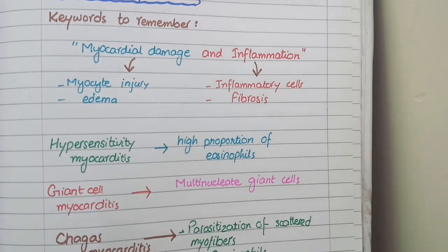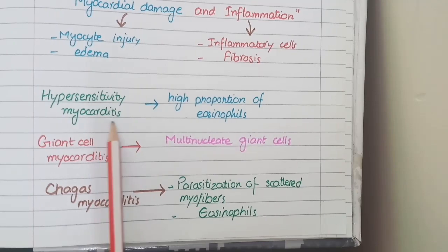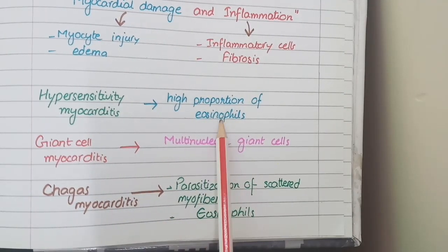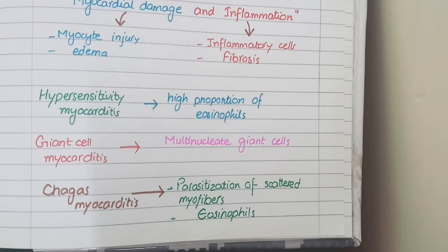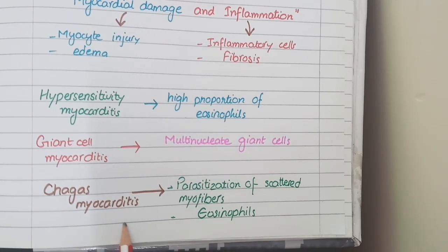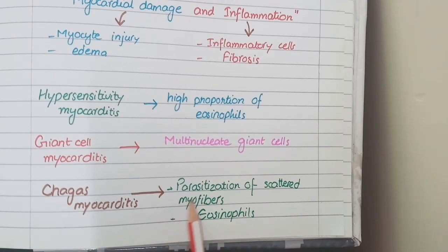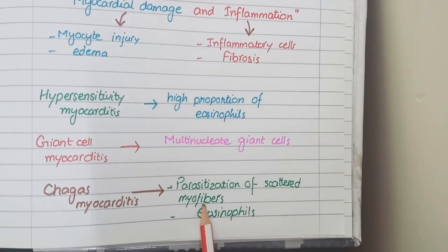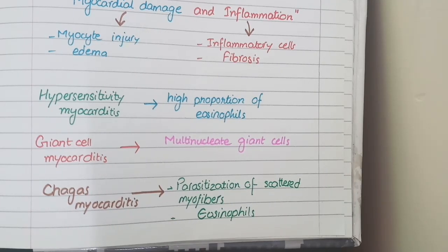There are additional microscopic features depending on the cause. In hypersensitivity myocarditis, you will see a high proportion of eosinophils, because hypersensitivity reactions are mediated by eosinophils. In giant cell myocarditis, you will see multinucleated giant cells. In Chagas myocarditis, which is a parasitic infection by Trypanosoma, you will see parasitization of scattered myofibers along with eosinophilic inflammatory cells.